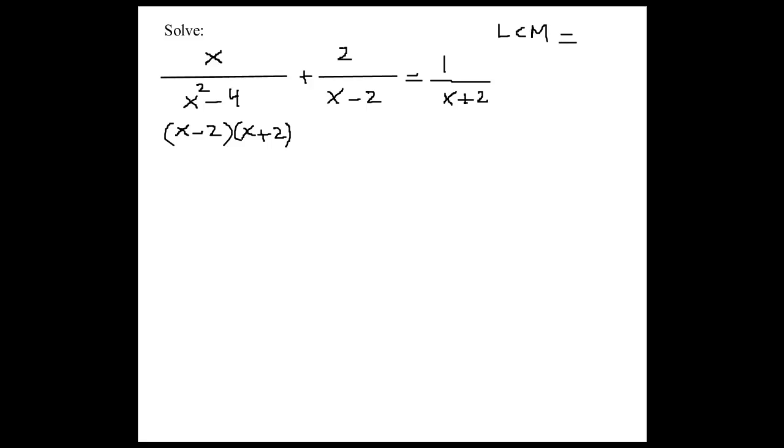Very good. So you find the LCM, which is x minus 2 times x plus 2. In this case, you have a difference of squares here. So that would be x minus 2 times x plus 2.